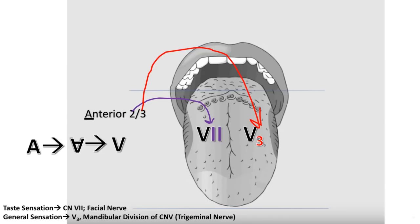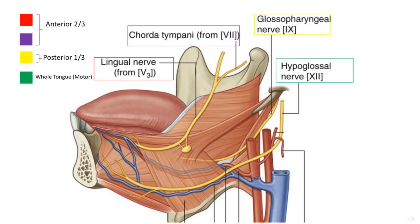Specifically, it's the chorda tympani of the facial nerve that provides the taste sensation, and it's the lingual nerve of the mandibular division that provides the general sensation. So just a quick recap: you have the anterior two-thirds which are shown in the red and purple boxes, and it's the lingual nerve and the chorda tympani that are innervating that portion. And then the posterior third which is innervated by the glossopharyngeal nerve. And then you have the hypoglossal nerve which innervates the entire tongue.